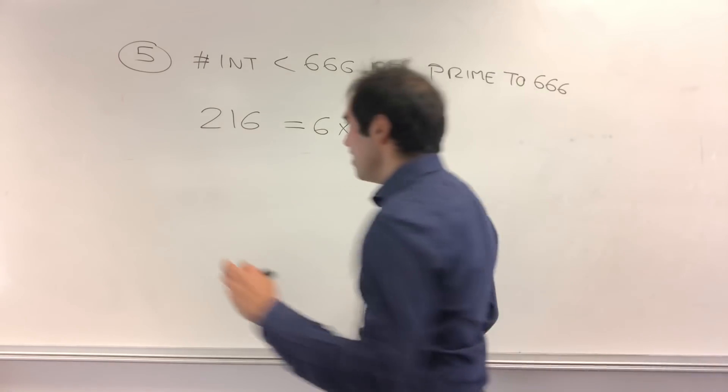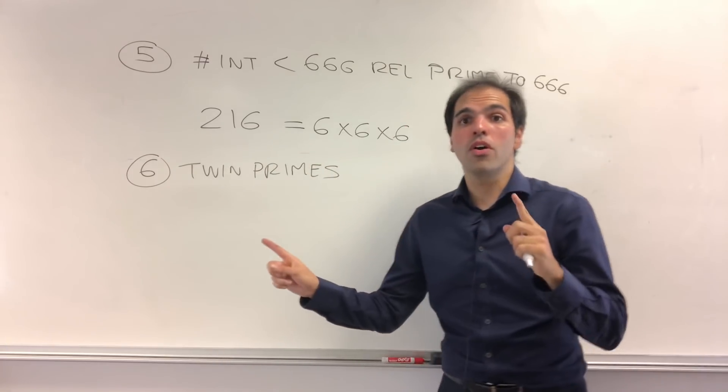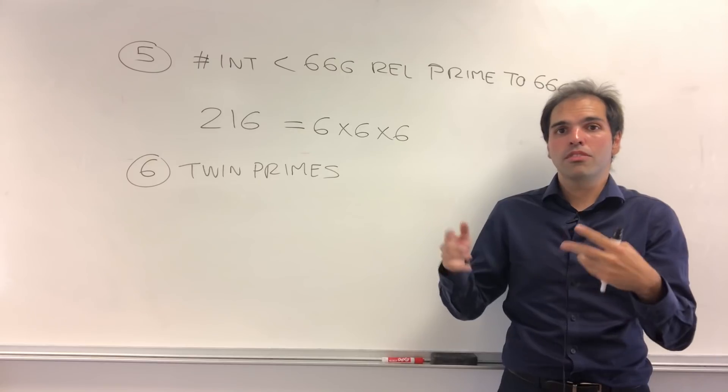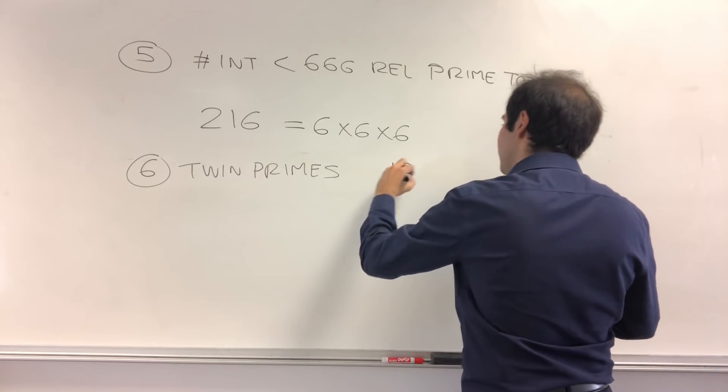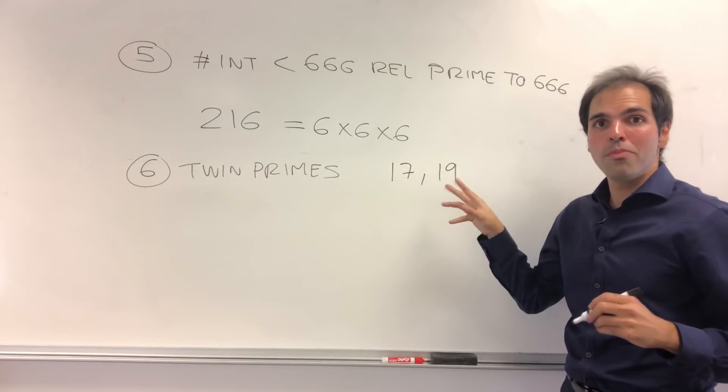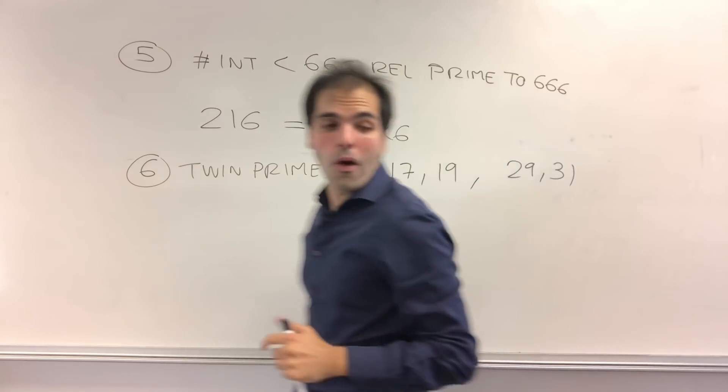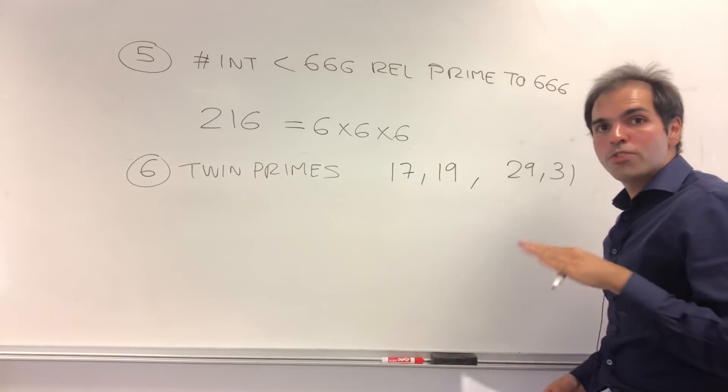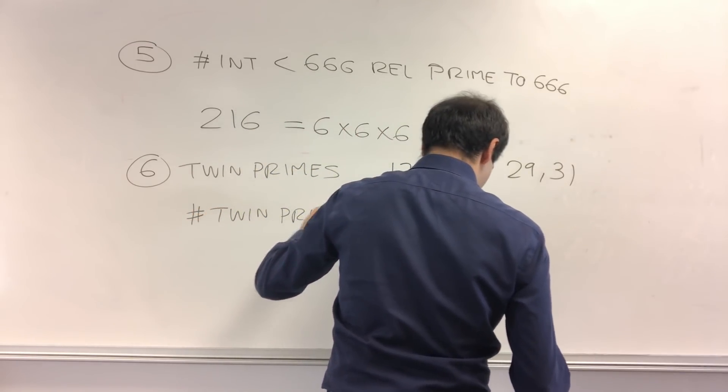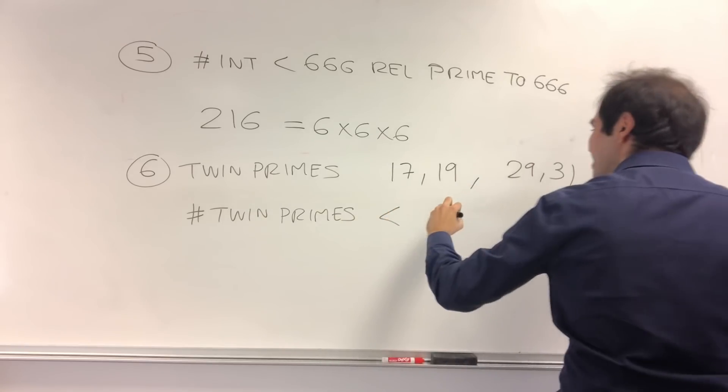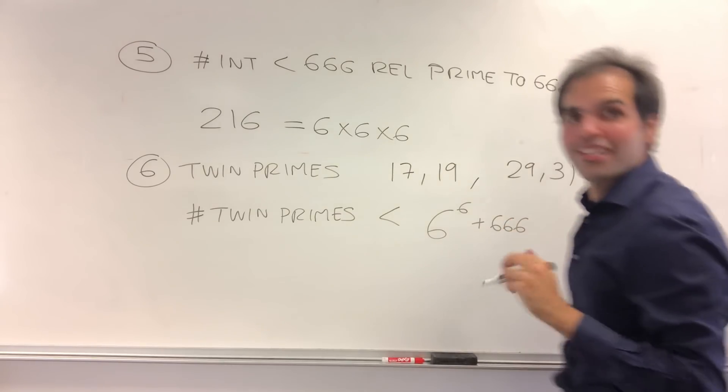because if you now look at twin primes, so I want to remind you, twin primes are sort of, not consecutive primes, but kind of, sort of, so it's primes whose difference is 2, like, for instance, 17, 19, they're two prime numbers, and they're just two apart. But also, I believe, 29 and 31, they're also two apart. And, well, we're not going to talk about the number of twin primes less than 666, but let's look at the number of twin primes less than, so kind of crazy, 6 to the 6 plus 666. So the number of twin primes less than this number, turns out, is 666.